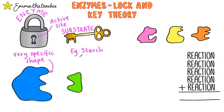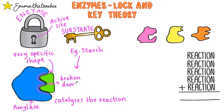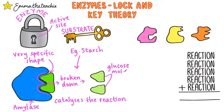One example of a substrate is starch, and the enzyme that it binds to is called amylase. If they come into contact with each other, the starch will bind to the active site of the amylase. When this happens, the amylase catalyzes the reaction, which means it speeds it up. The reaction taking place is the breakdown of starch into its products — starch breaks down into glucose, so here we can see two glucose molecules as the products.